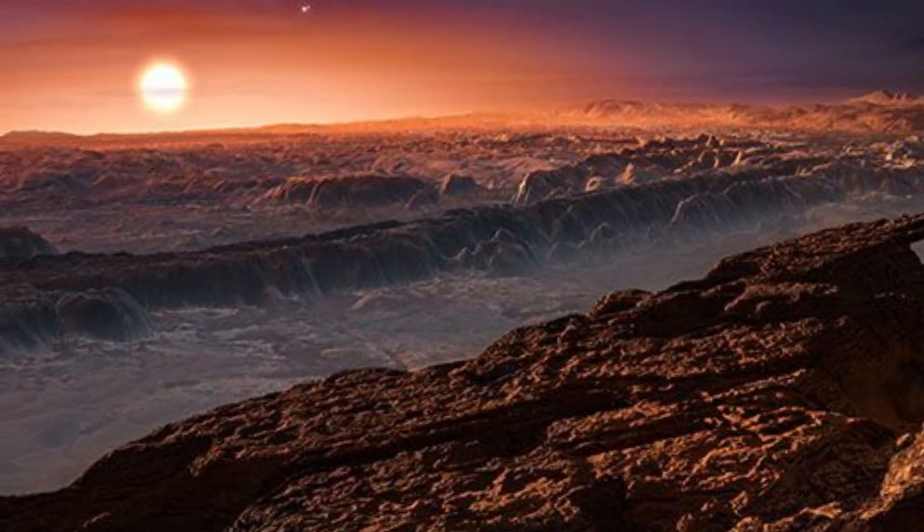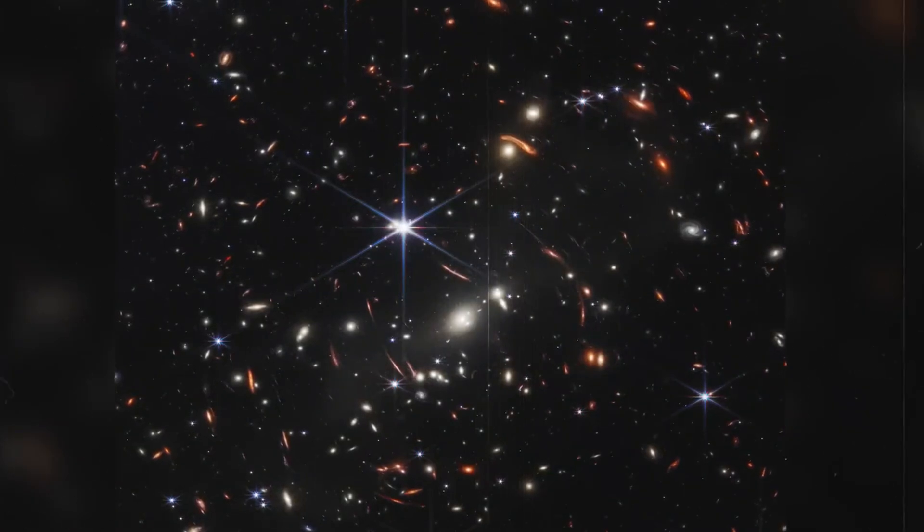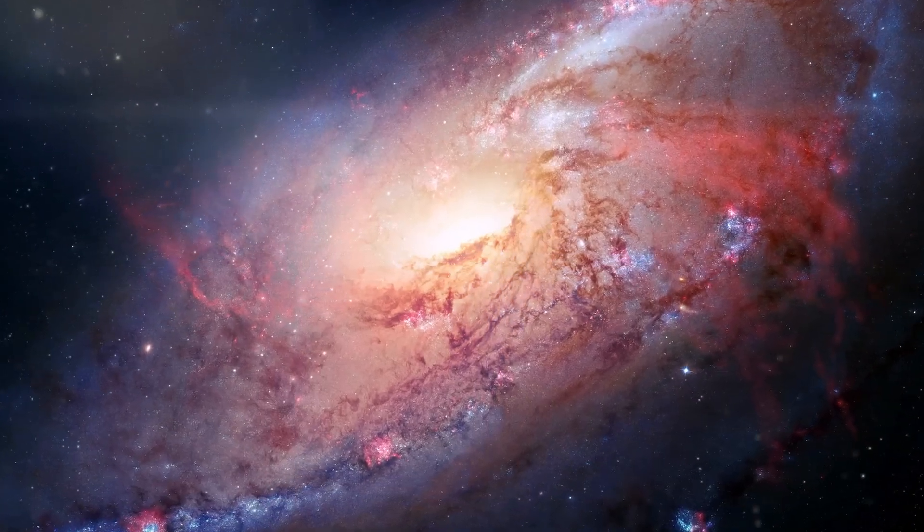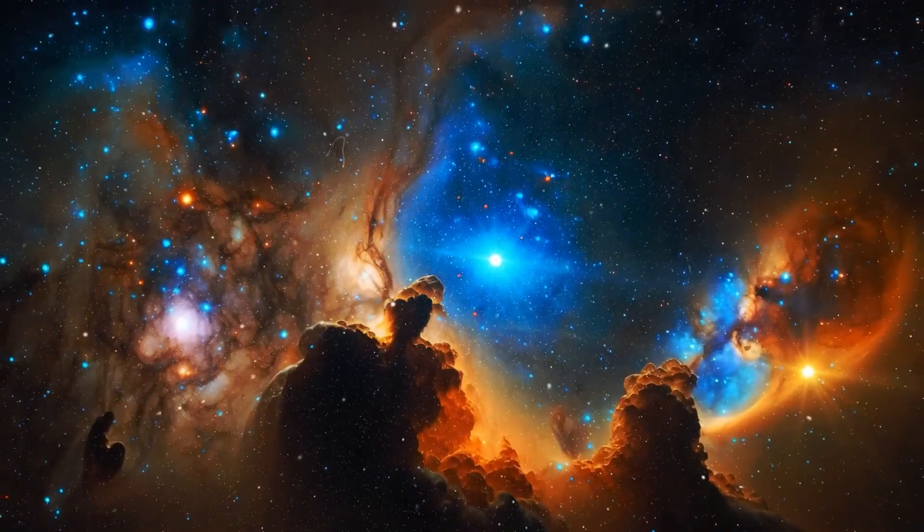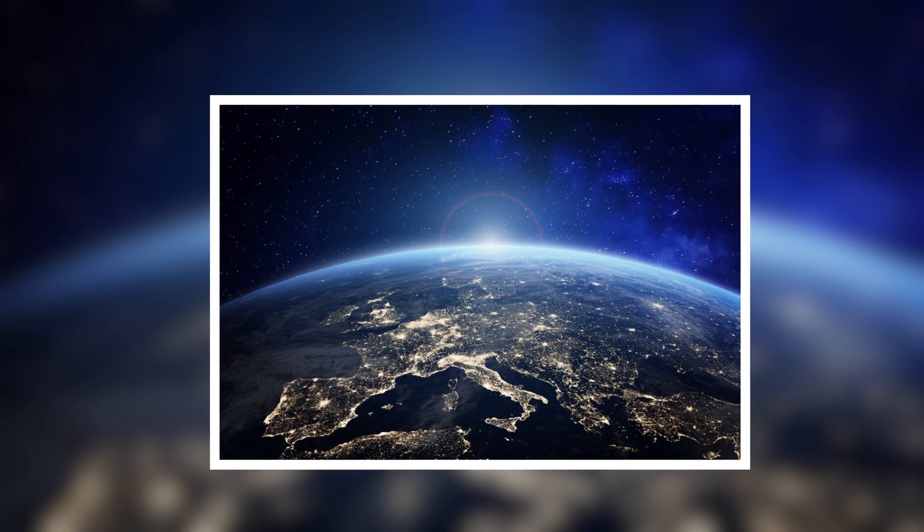Recently, the James Webb Space Telescope, JWST, uncovered something astonishing on Proxima b: mysterious lights that resemble city lights on Earth. This unexpected find has sparked excitement and raised new questions about life beyond Earth.